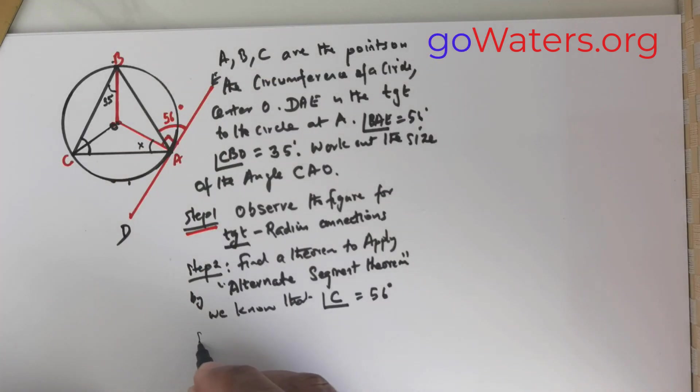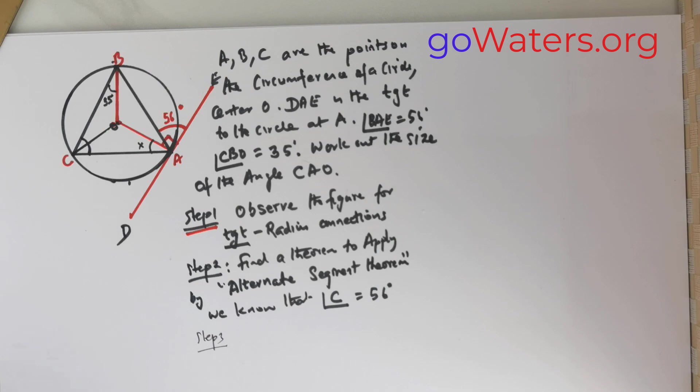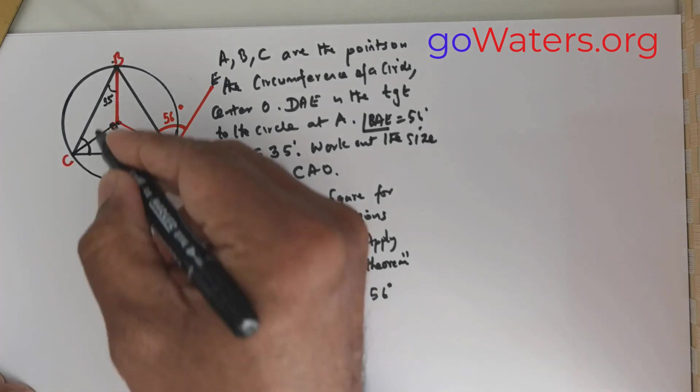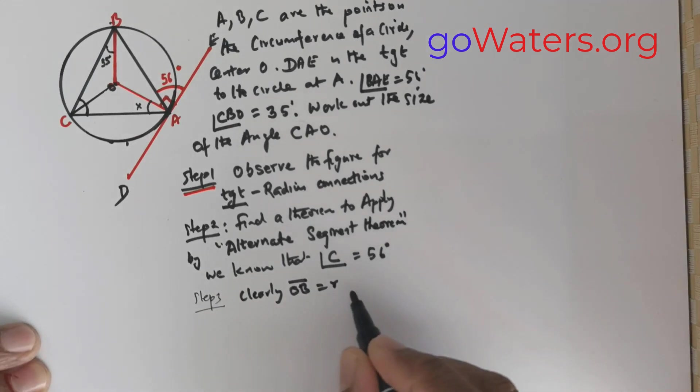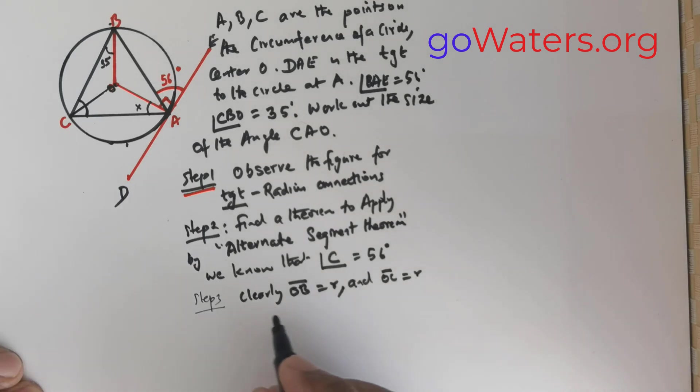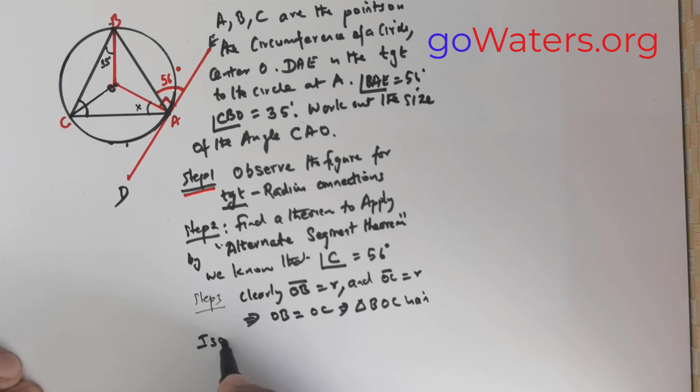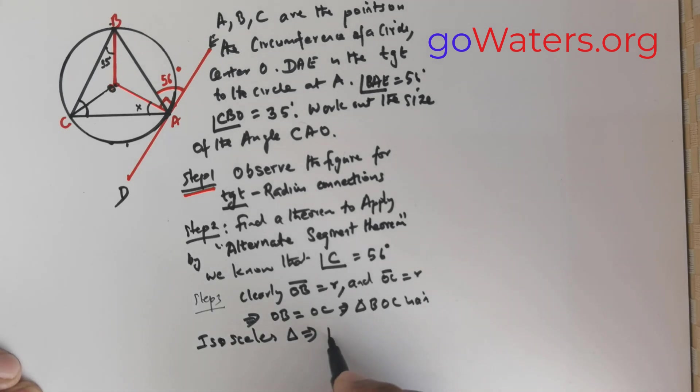Now coming to the next point, step number 3. Now clearly OB is the radius. Clearly what do you see? OB is equal to R. And you see here OC is also equal to R. So this would mean OB is equal to OC. This means triangle BOC is an isosceles triangle. So this would mean what? The base angles are same.